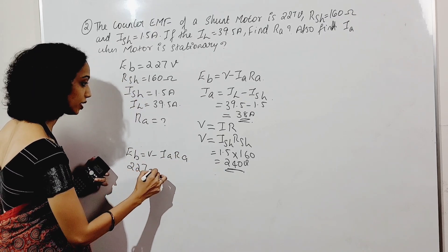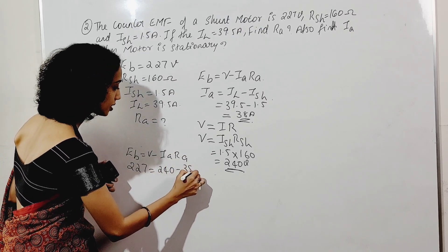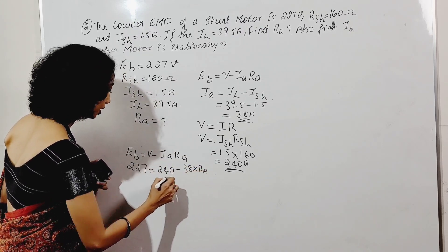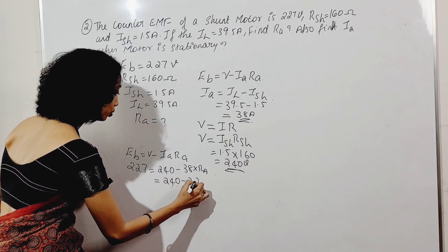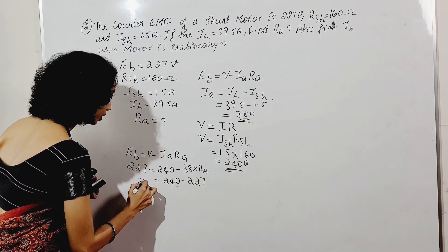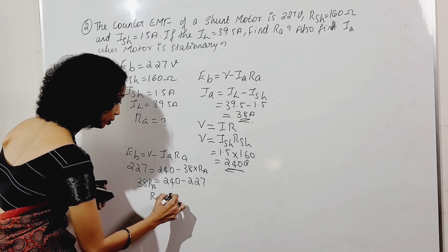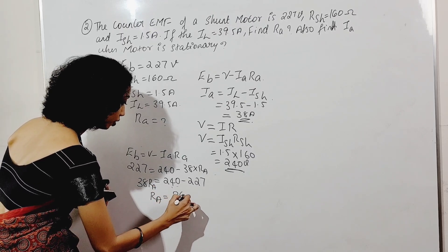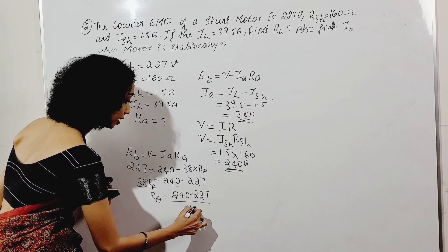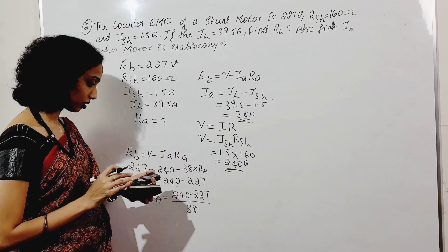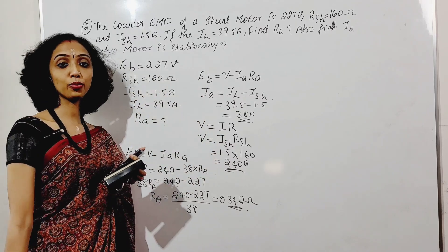So RA: 240 minus 38 into RA equals 240 minus 227. Therefore 240 minus 227 is equal to 38 times RA. Now RA is equal to (240 minus 227) divided by 38. RA value equals 0.342 ohm.